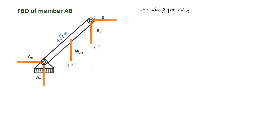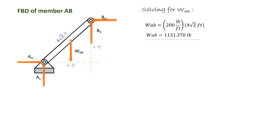Let us solve for the weight of member AB. Weight AB equals 200 pounds per feet times 4√2 feet. We multiply by 200 pounds per feet because the weight of this member varies depending on its length. Since its length is 4√2 feet, we get WAB = 1131.370 pounds.